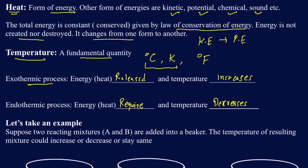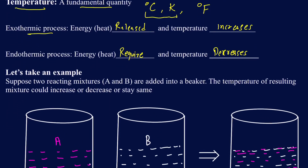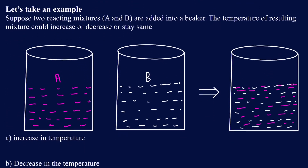Let's take an example where we can actually relate energy and temperature with one another. Suppose we have these two beakers containing two reacting mixtures, A and B. Assume both of them are at thermal equilibrium — initially they're both at room temperature, say 22 degrees Celsius or 295 Kelvin. When I mix those two together, pouring A into B, the resulting solution is going to be the mixture of A and B.